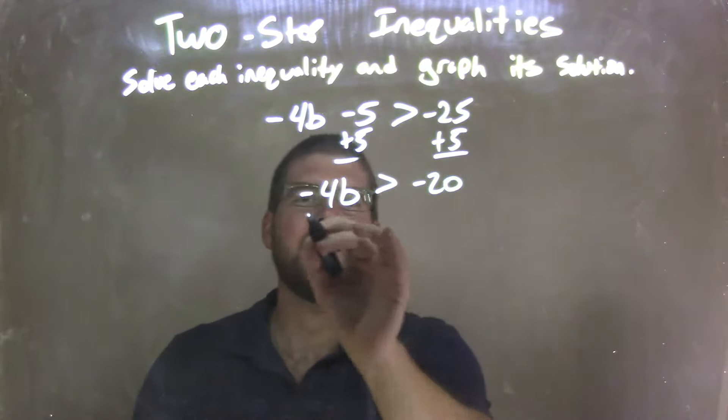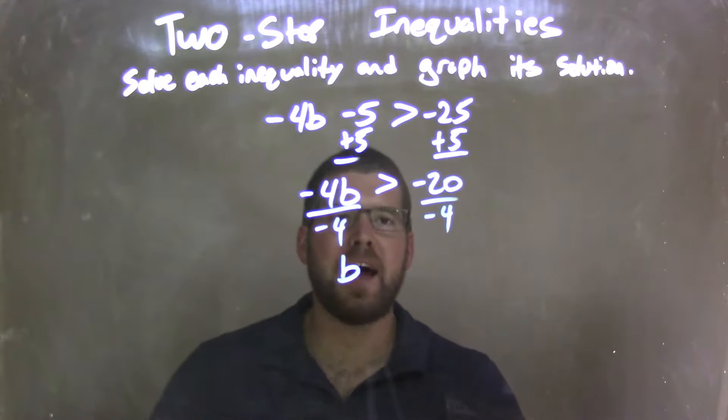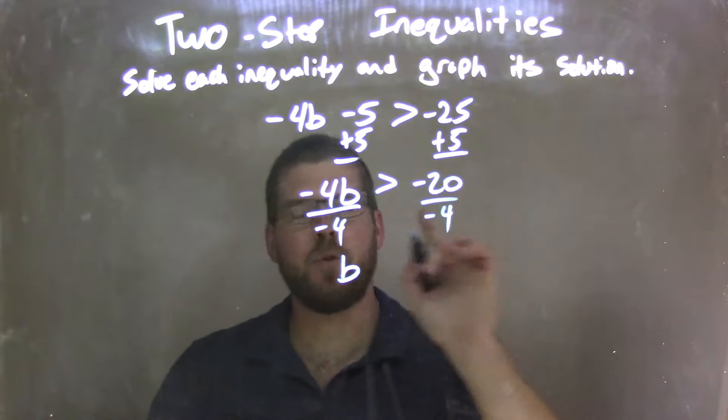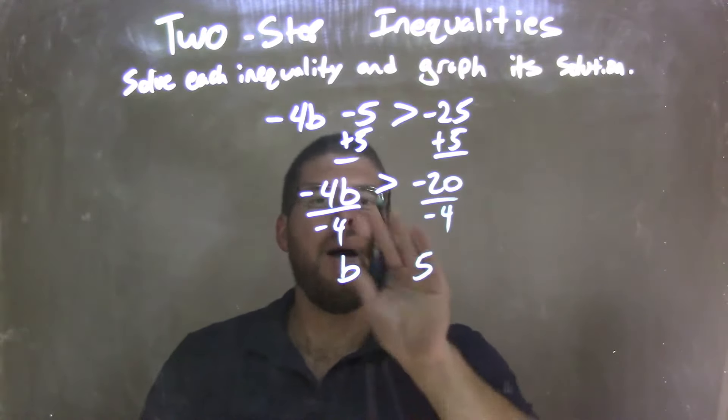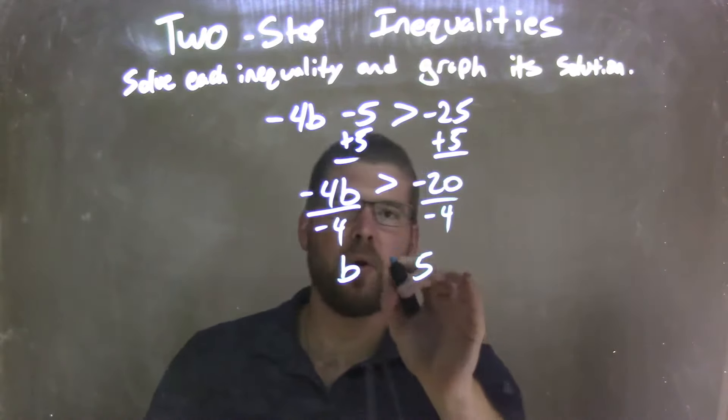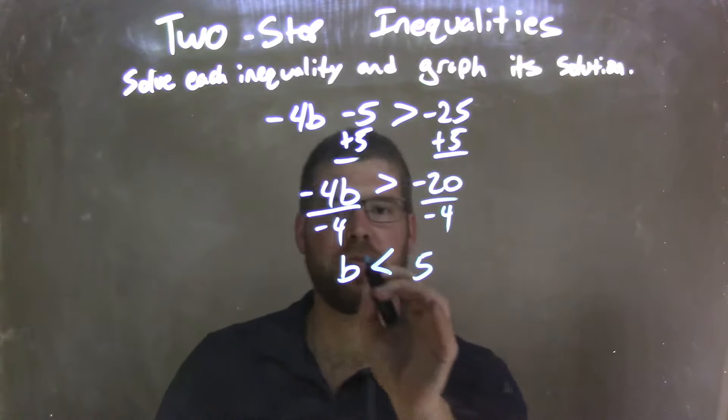I then need to divide by negative 4 on both sides, leaving b by itself on the left, and negative 20 divided by negative 4 is positive 5. Negative divided by negative is positive. But since I divided over the inequality, I'm going to flip this inequality to write it now as b is less than positive 5.